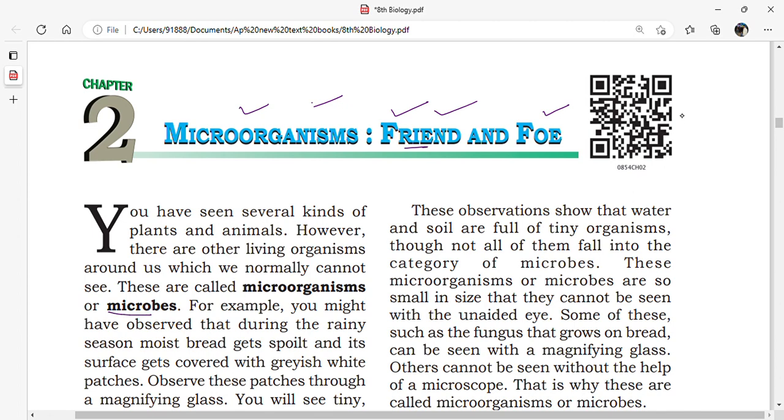You have seen several kinds of plants and animals, but they are visible to us. However, there are other living organisms around us which we normally can't see. The organisms which we can't see with our eye are called microorganisms or microbes.